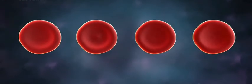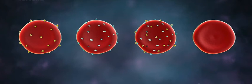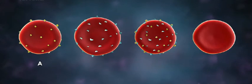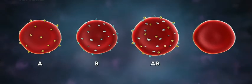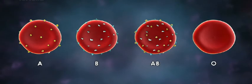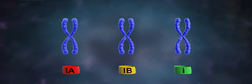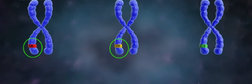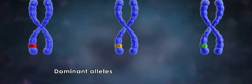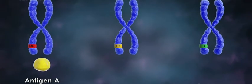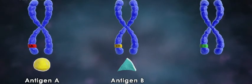Based on the reactions of antigens and two antibodies, human blood groups are most commonly divided into four types: A, B, AB, and O. These four groups can be expressed through the use of three different alleles: IA, IB, and I. IA and IB are the dominant alleles, while I is recessive. IA will produce antigen A, IB will produce antigen B, and the recessive allele I will not produce any antigen.